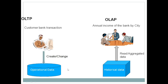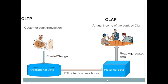Daily transactions are moved from the OLTP system to the OLAP system at the end of the day. Using the banking example, after closing hours, all the transactions created in the OLTP system are moved to the OLAP system using an ETL process — Extraction, Transformation, and Load. All transactions are loaded into the OLAP system, which maintains historical data for 10 to 20 years.